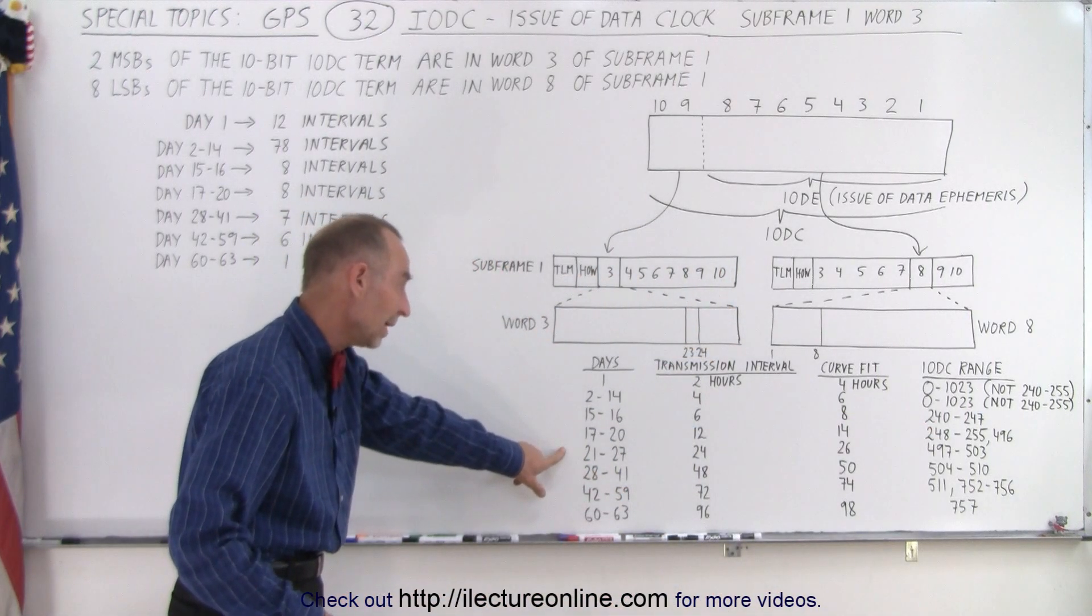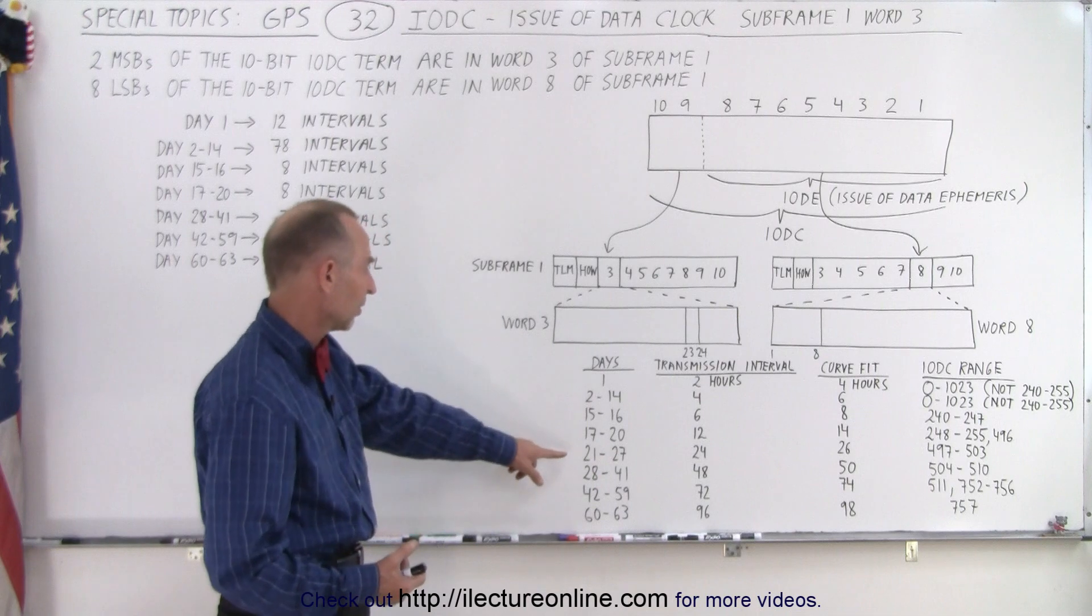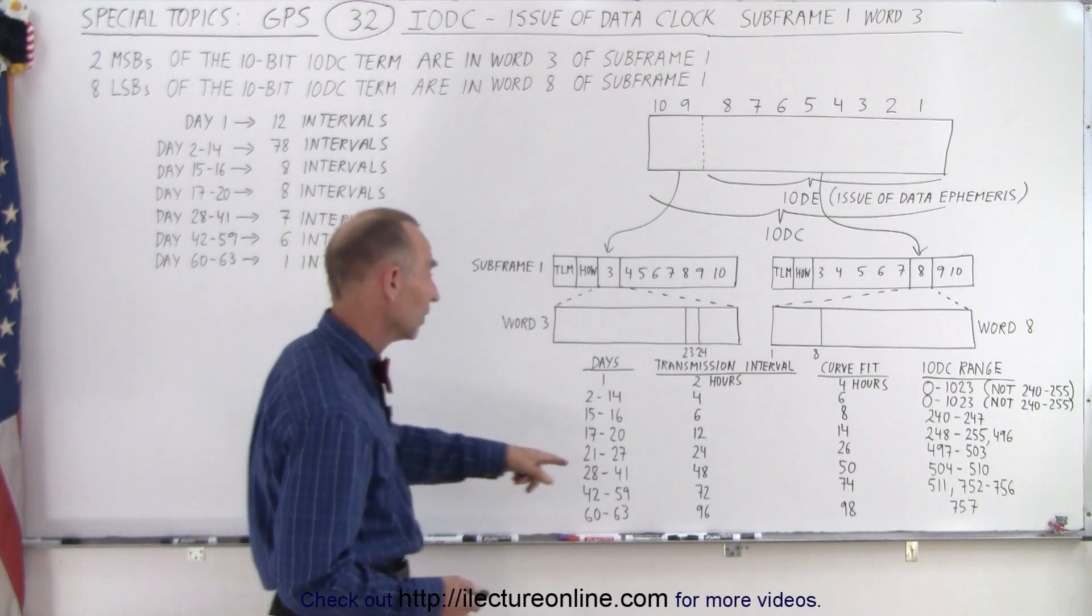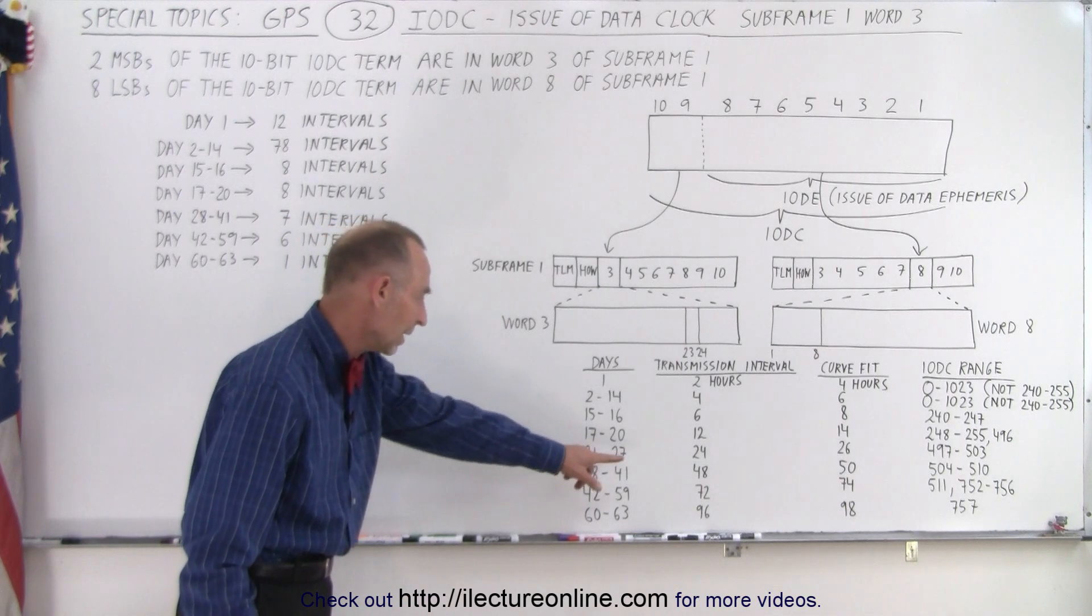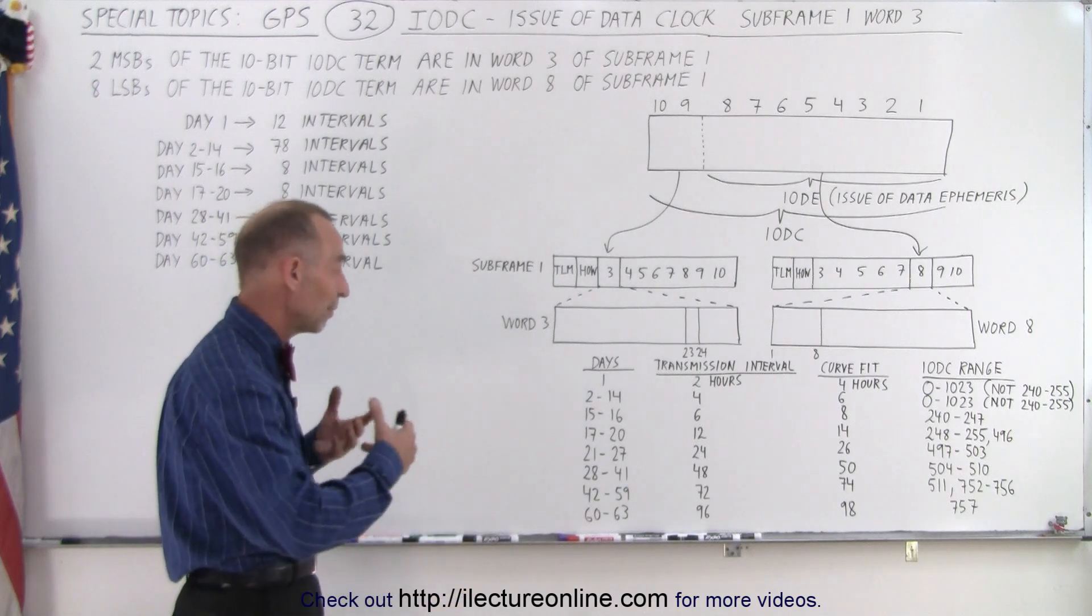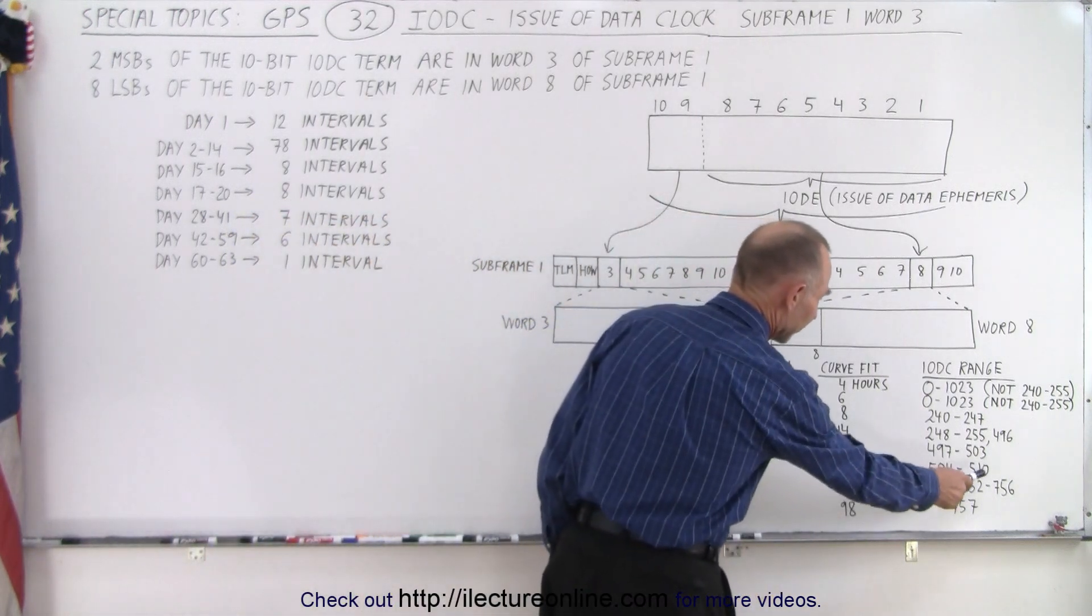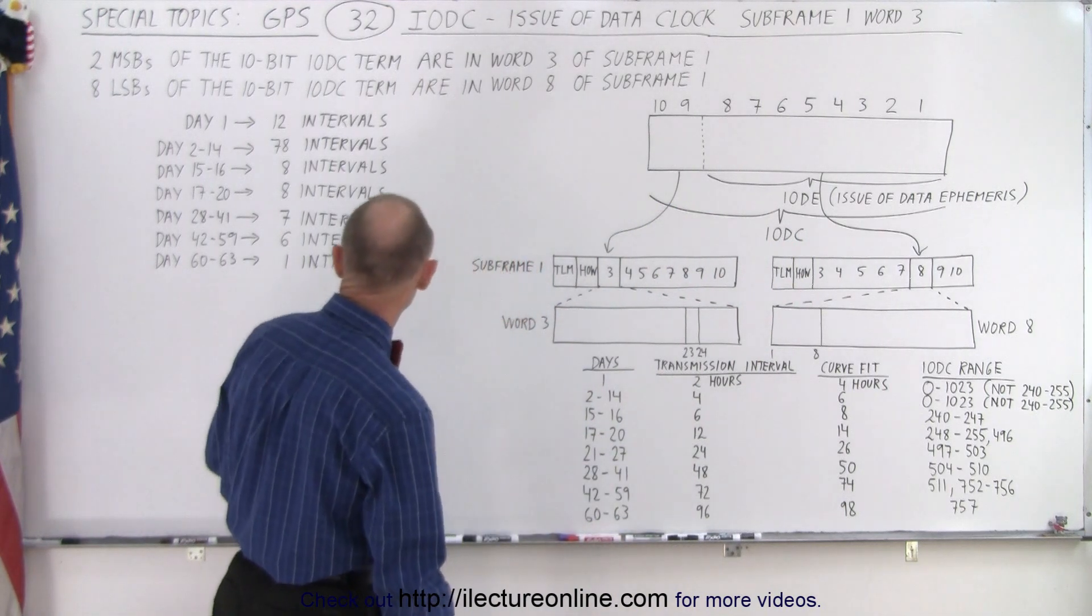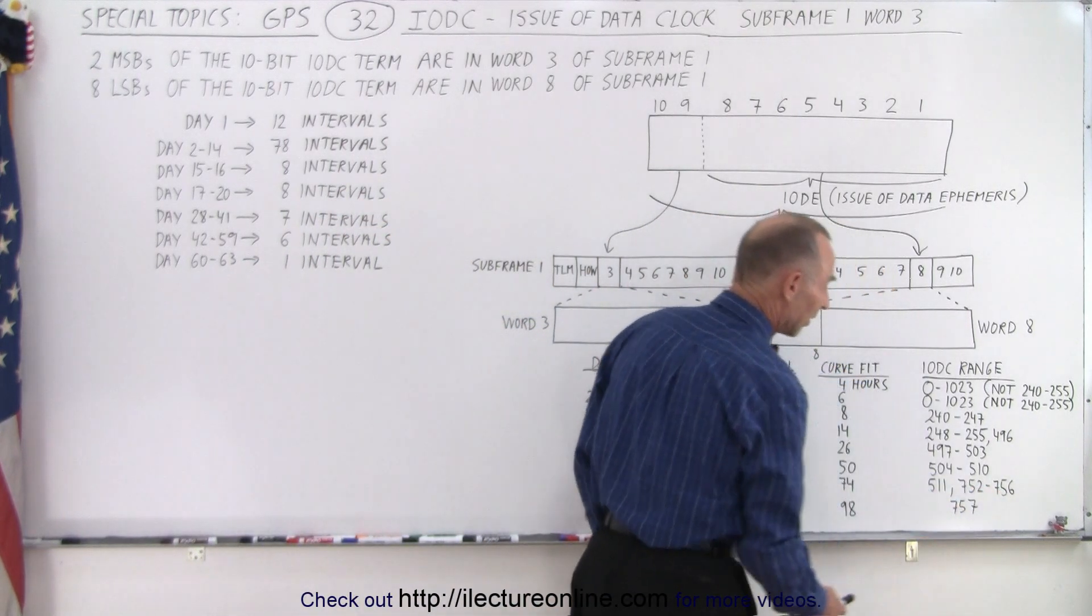Then from 21 to 27 days, now you have a new data set every 24 hours, a period of 7 days, 7 intervals. So 7 intervals means you have numbers from 497 to 503, and then finally from 28 to 41 days, you now have a new message set every 48 hours, so it really becomes aged if you have to go that many days before getting retransmitted data to the satellites. Then notice you use numbers 504 to 510, and then finally for 42 to 59 days, 72 hours every 3 days of the transmission, we need 6 intervals, and they give you the numbers 511 and 752 to 756 to utilize for that.